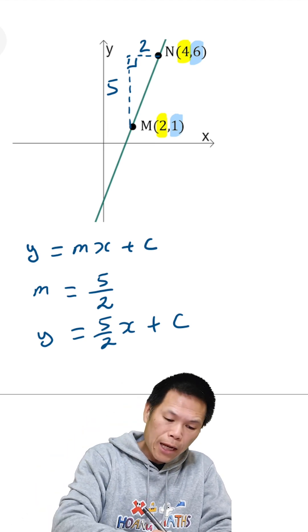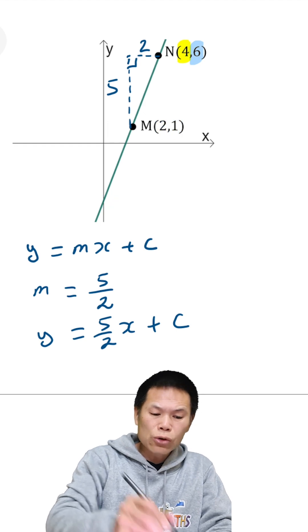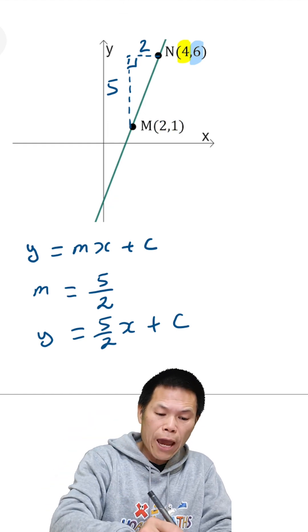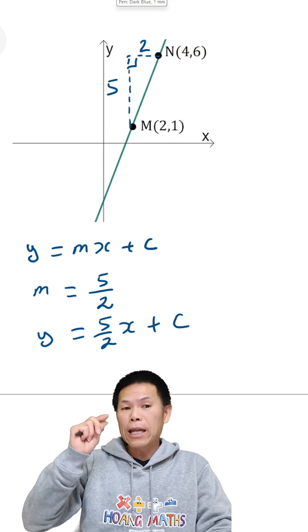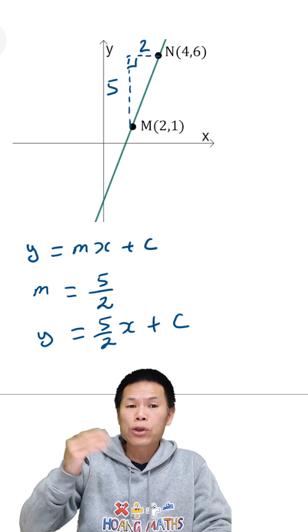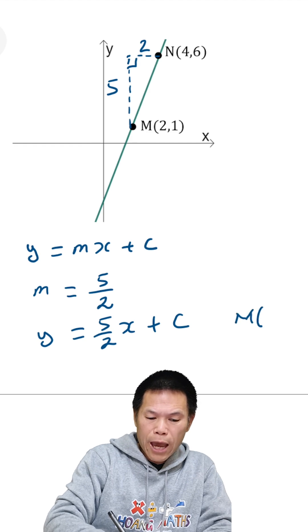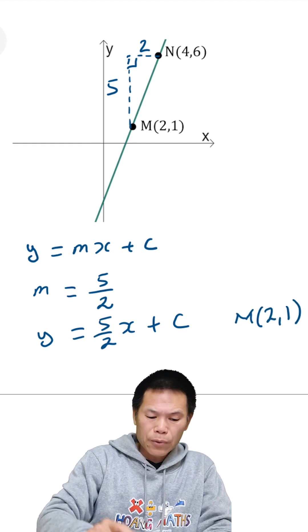Now we just need to find the value of c, that is this value here. To work it out, we can either use point M at two, one or we can use point N at four, six. Let's just use two, one. I use point M, two, one.